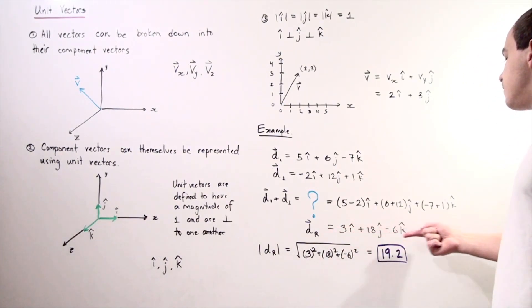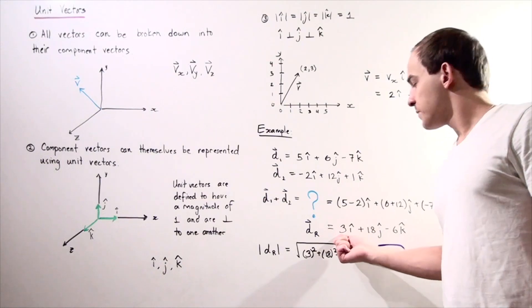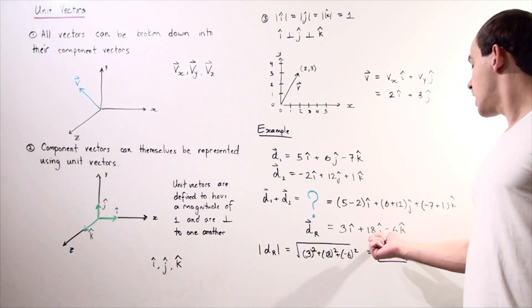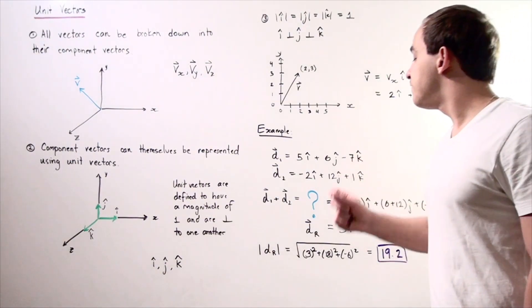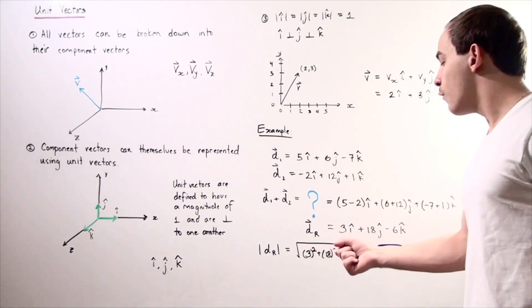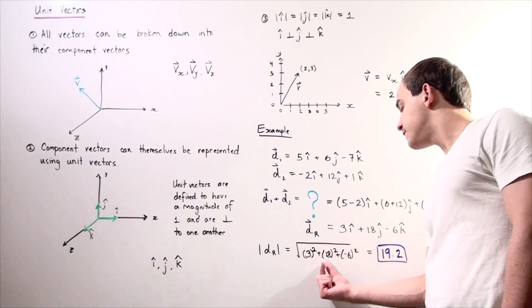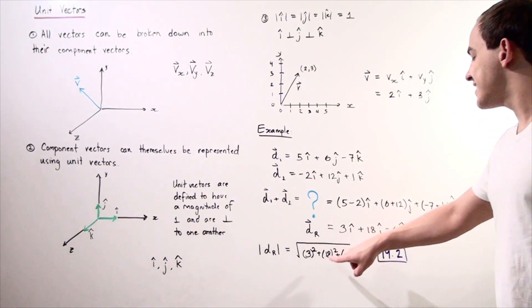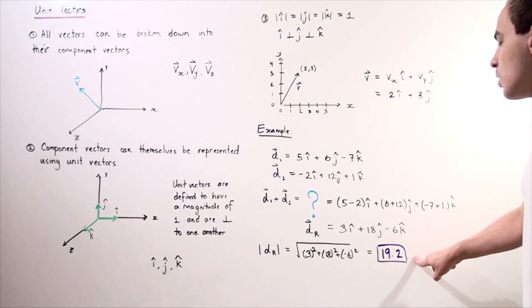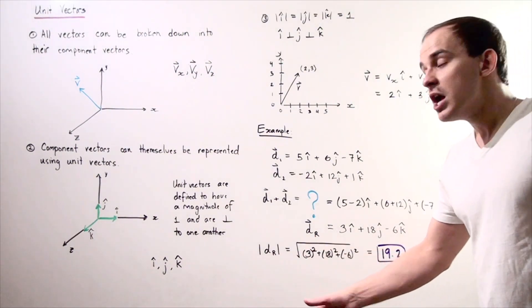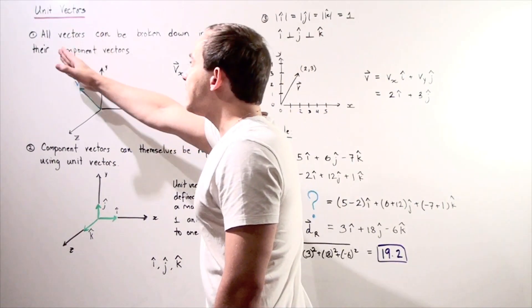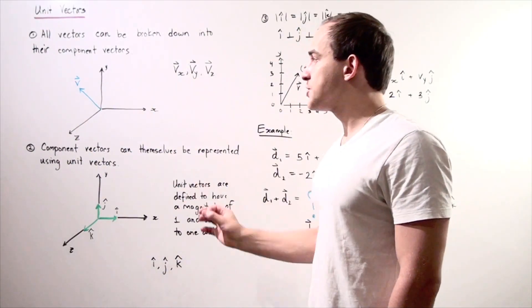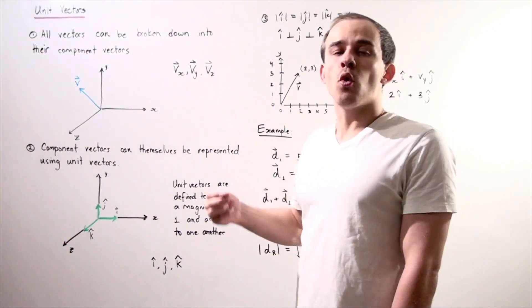Our resultant vector d is equal to 3i-hat plus 18j-hat minus 6k-hat. To find its magnitude, we use the formula: the square root of Vx squared plus Vy squared plus Vz squared, which gives us the square root of 3 squared plus 18 squared plus negative 6 squared, approximately equal to 19.2. The entire point of using unit vectors is to represent the component vectors of our original vectors; in a three-dimensional plane, each component vector has a corresponding unit vector.